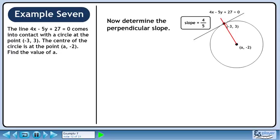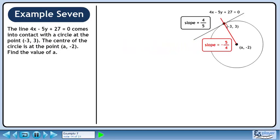Now determine the perpendicular slope. The negative reciprocal is -5/4. Store the slope beside the red line.